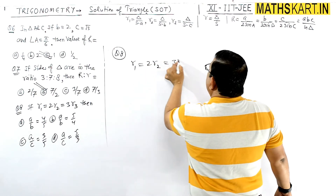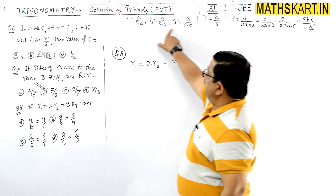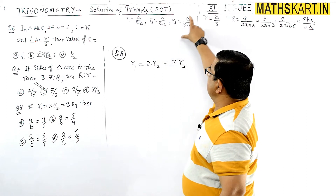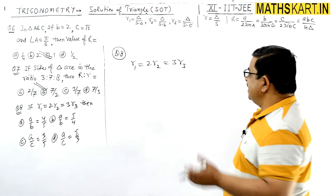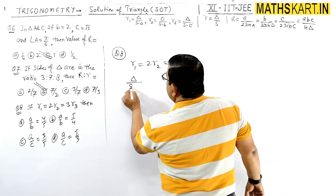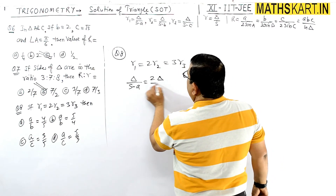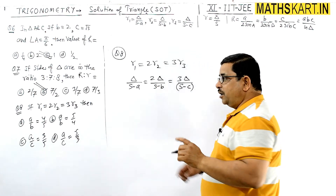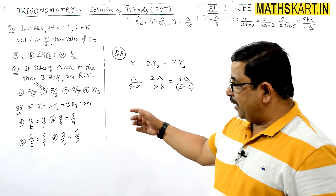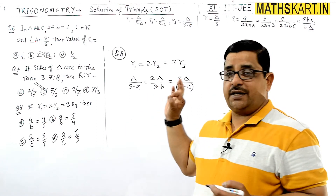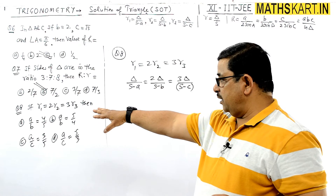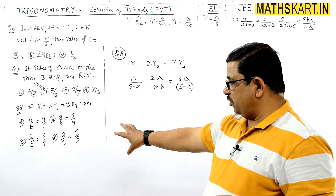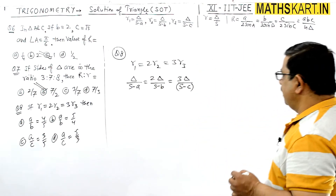So: Δ/(s-a) = 2·Δ/(s-b) = 3·Δ/(s-c). We need side ratios a/b and a/c. From the options, A and B options involve ratio of side a to b, and C and D involve ratio of side a to c. Cancel Δ throughout.